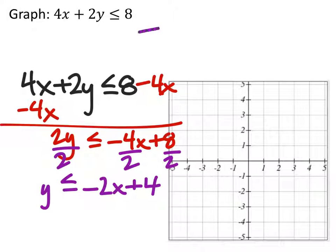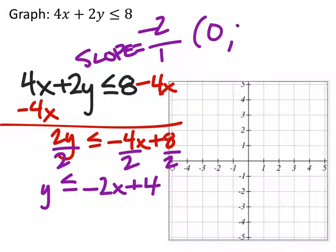So our slope is negative 2 over 1, and our y-intercept is 0, 4. So we can make our point here. Slope is negative 2 to the right 1. That gives us our second point.